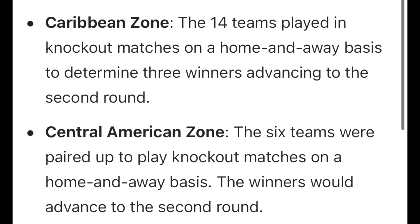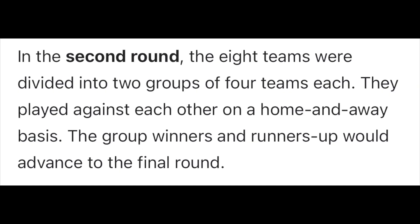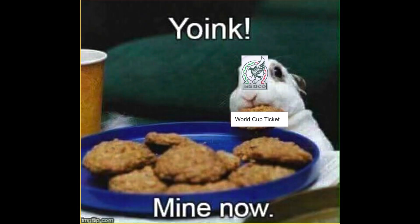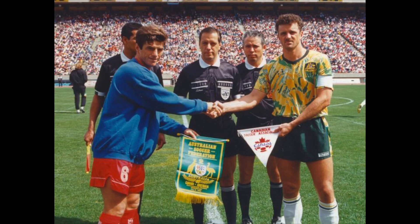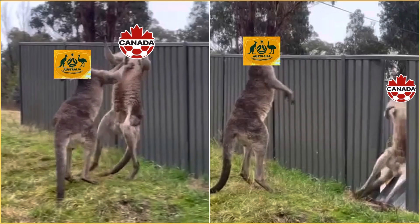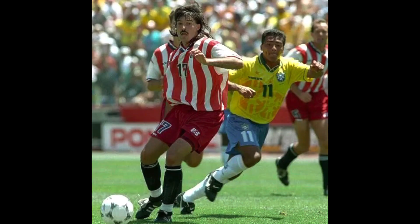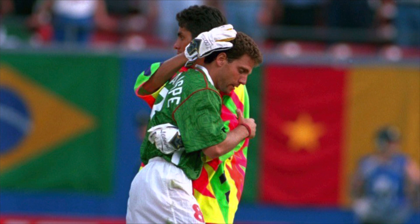With the CONCACAF championship no longer a thing, the format consisted of the Caribbean zone and the Central America zone having first-round matches, with top teams qualifying to the second round. The second round had two groups of four, in which the top two teams of each group would go on to the final round. Mexico would top the final table group and qualify to the World Cup. Canada had to play an intercontinental playoff match against Australia, which it unfortunately lost in penalty shootouts. At the World Cup, both the U.S. and Mexico would be ultimately eliminated in the round of 16.